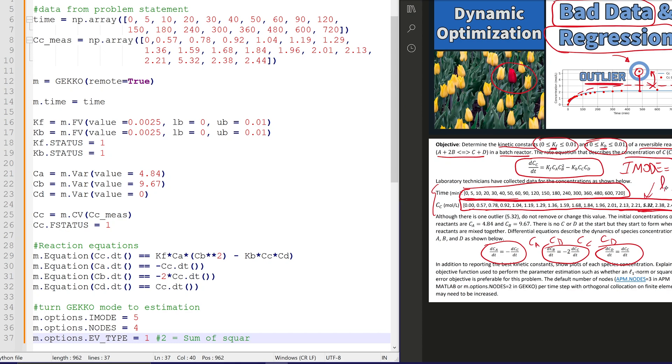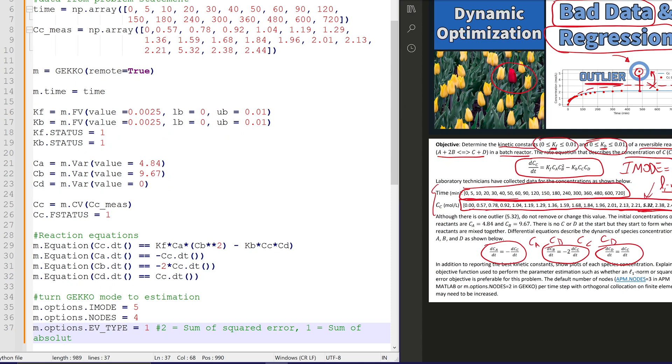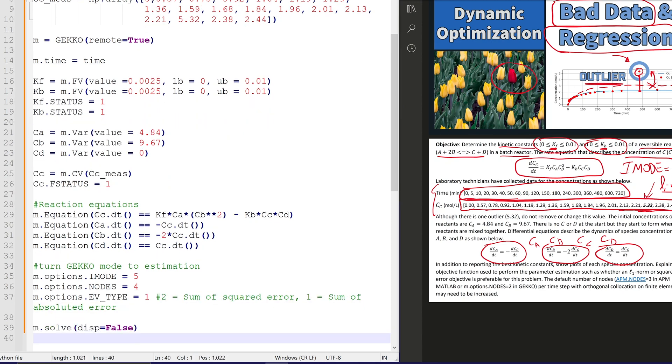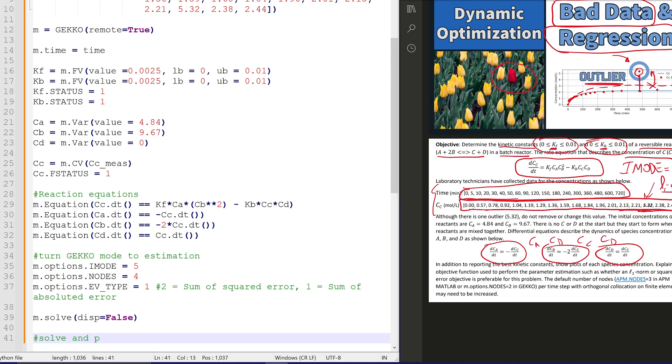And if we set it to 2 instead, that's going to be a sum of squared error. And 1 is going to be the sum of absolute error. Okay, absolute error. We'll solve it.